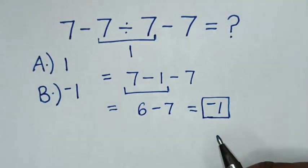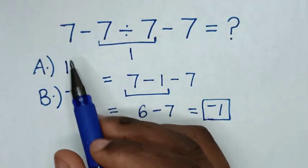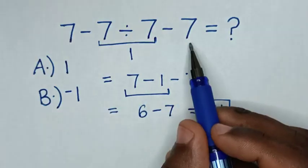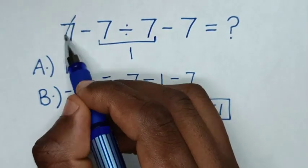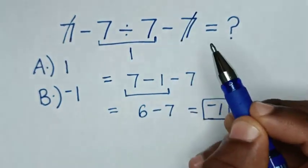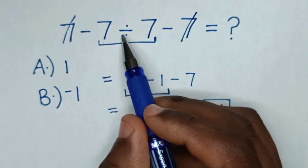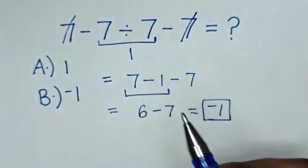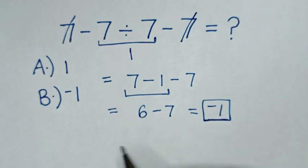To solve using another method: here is positive 7 and this is negative 7. 7 minus 7 is 0, so these two will cancel. Then it will be negative 7 divided by 7, which is negative 1. Therefore this is the correct answer.